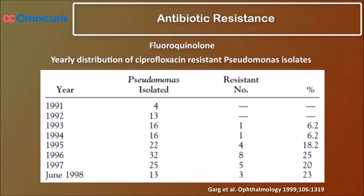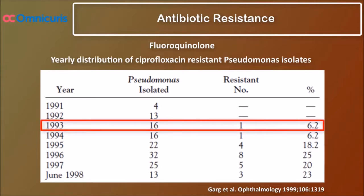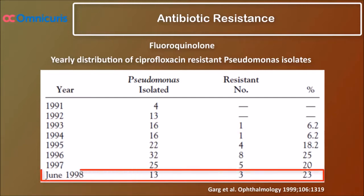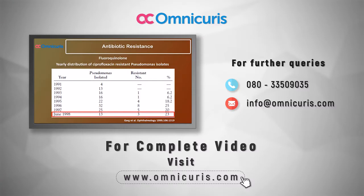In 1993, only 6.2 percent of the isolates were resistant to fluoroquinolones, which progressively increased year by year, and by June 1998 it became 23 percent. So there was a significant increase in the resistance level between 1993 to 1998.